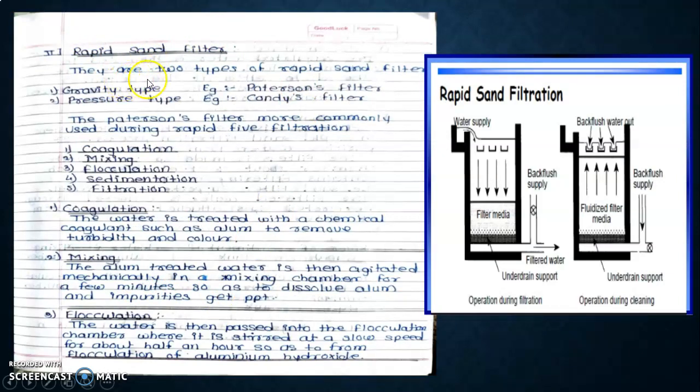Rapid sand filtration has two types: gravity type and pressure type. Patterson filters are more commonly used during rapid sand filtration. The process includes coagulation, mixing, flocculation, sedimentation, and filtration. Coagulation means the water is treated with a chemical coagulant such as alum to remove turbidity and color. In mixing, the alum-treated water is then agitated mechanically in a mixing chamber for a few minutes so that the dissolved alum and impurities get precipitated.